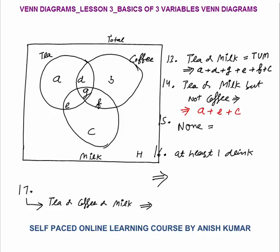None of the drinks — we have to count the number of people who consume none of the drinks, and that will be H, because H lies outside all three circles.